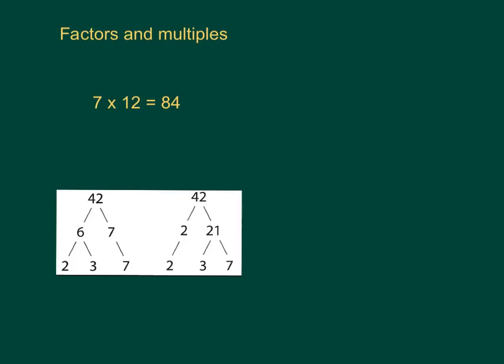Any number that divides exactly into another number must be one of its factors. So for example, 12 is a factor of 84, as is 7, whereas 84 is a multiple of 12 and 7 because you can multiply 7 and 12 to get to 84.